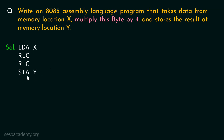For storing the result we are going to use the data transfer instruction STA — that is, we will store the content of the accumulator, which due to executing the RLC instruction twice has already been changed because we multiplied the data by 4. So the data will now be stored inside memory location Y. To complete the program, we also need the instruction HLT, which signals to the microprocessor that this is the end point of the program.